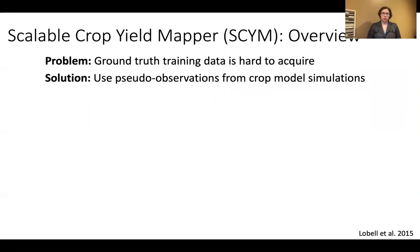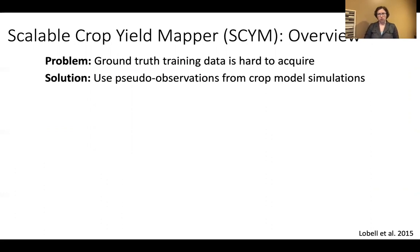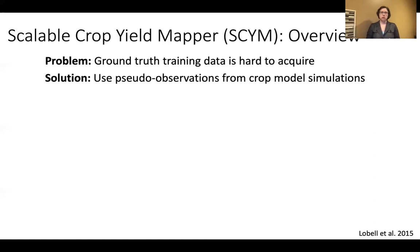Our lab group uses something called the Scalable Crop Yield Mapper, or SCIM, first presented in the paper LaBelle et al. 2015. A common problem with satellite yield estimation is that ground truth training data is hard to acquire. The solution for SCIM is to use pseudo observations from crop simulation models.